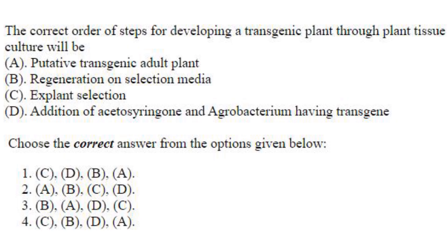The first question: The correct order of steps for developing transgenic plants through plant tissue culture. First will be explant selection, then addition of acetosyringone and Agrobacterium having the transgene, then regeneration on selection media, and then the putative transgenic adult plant. So the answer is CDBA, which is option 1.